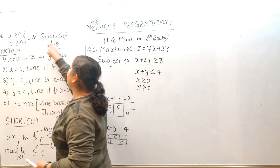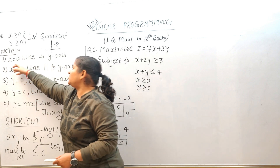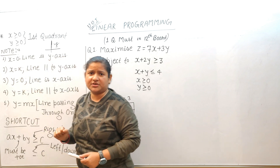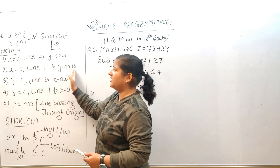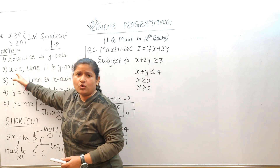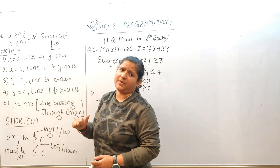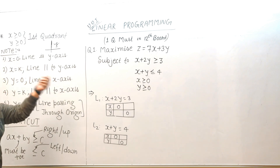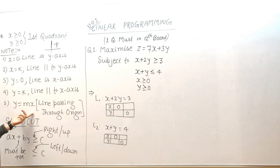In every question, we will shade the first quadrant. Let's understand some equations: x = 0 is the equation of the Y-axis. If x equals a constant, the line is parallel to the Y-axis — for example x = 2, x = -1, x = 3. y = 0 is the X-axis. If y equals a constant, the line is parallel to the X-axis.